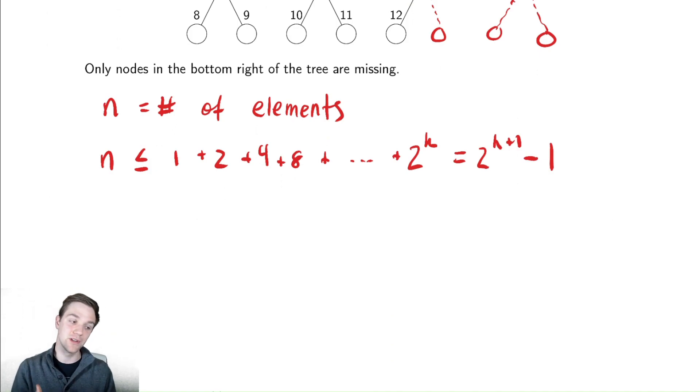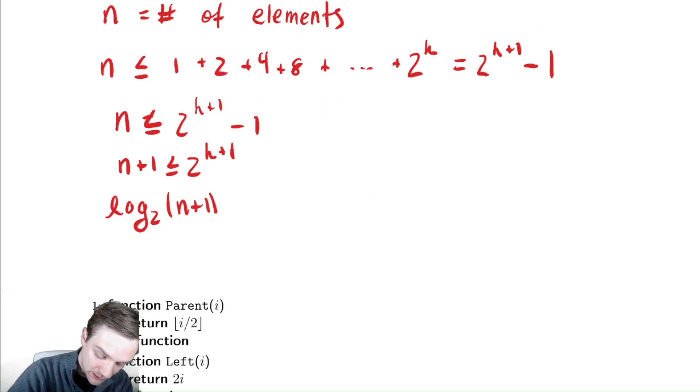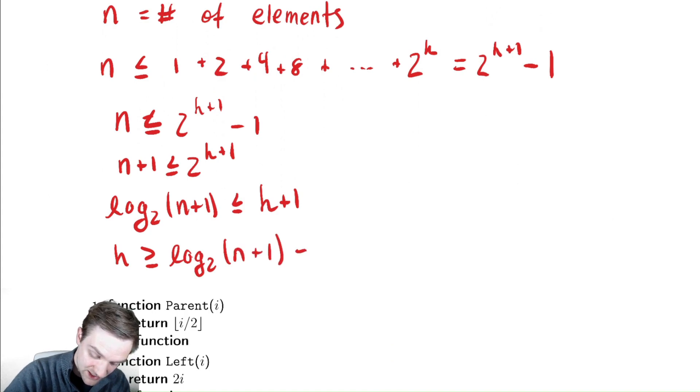Let us solve that for h and we have n is less than or equal to 2^(h+1) - 1. Let's add one to both sides. We have n + 1 less than or equal to 2^(h+1). Take a log base two of both sides and we have log base two of n + 1 is less than or equal to h + 1. And then subtract by one and we have h is greater than or equal to log base two of n + 1 minus 1.